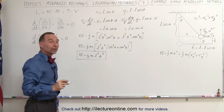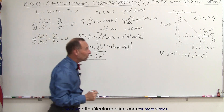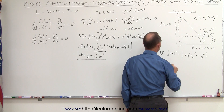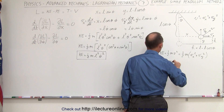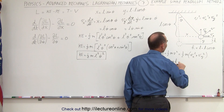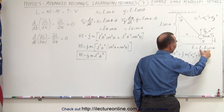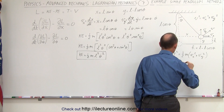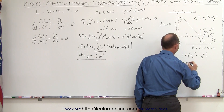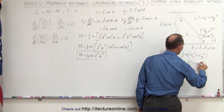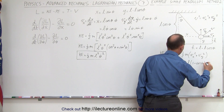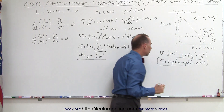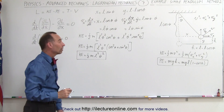Now we still need the potential energy. The potential energy equals mg times the height, and in this case the height can be written as l minus l times the cosine of theta, which equals mg times l times one minus the cosine of theta. And here we have an expression for the potential energy of the simple pendulum.